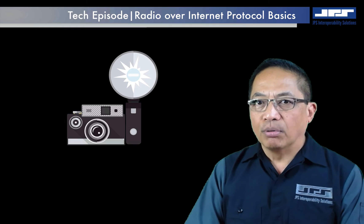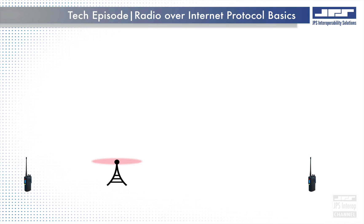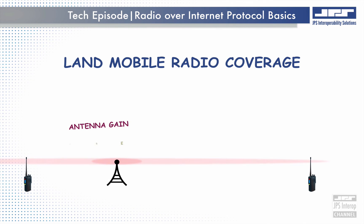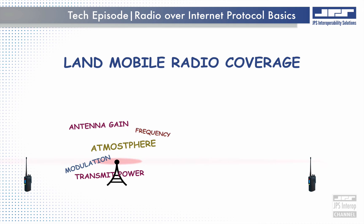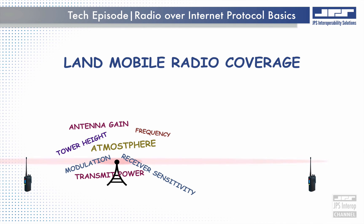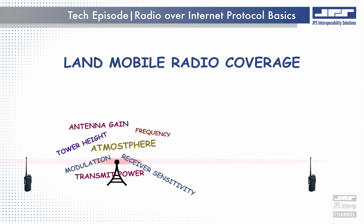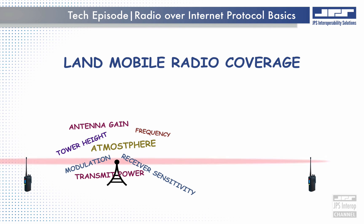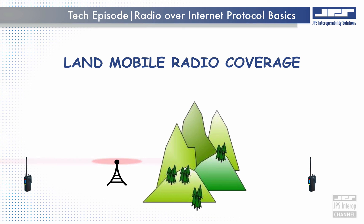So let's talk about land mobile radio communications and specifically radio coverage. Land mobile radio coverage performance is defined by many factors, but no matter how well a radio system performs, there are external factors that can limit the coverage of that technology. This is a great opportunity to use technology to improve an existing technology, and in this situation, the technology we're going to add is the network.